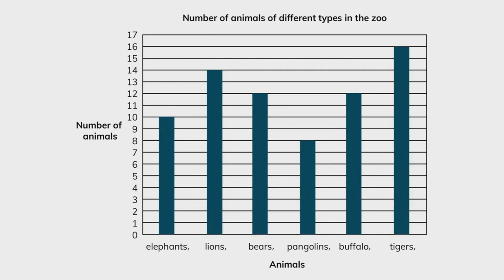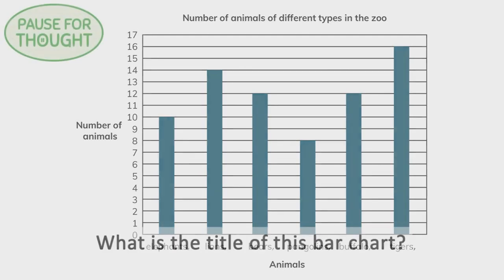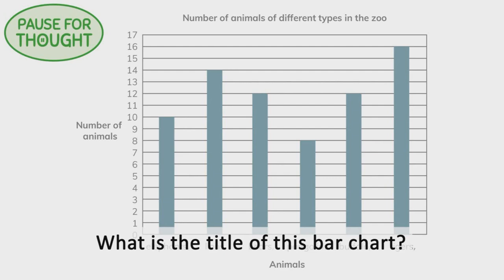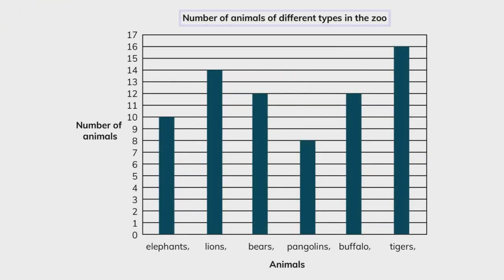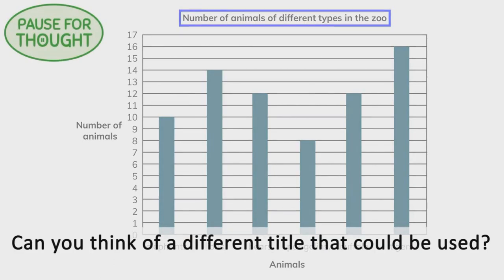A bar chart must always have a title. What is the title of this bar chart? The title of the bar chart is Number of Animals of Different Types in the Zoo. Can you think of a different title that could be used?